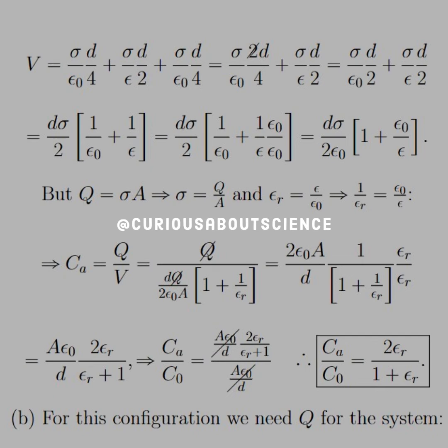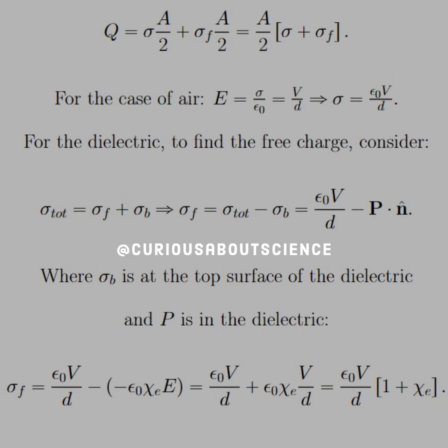Now for configuration B, this is going to be a little more tricky. Since capacitance requires both Q and V, we need to find Q for the system. Based on the diagram, we know that the surface area of the plates are split in half. So we have a surface charge for the air, and then a surface charge for the dielectric material, and both of those are multiplied by A over 2, which we can factor out as we see here, sigma plus sigma free.